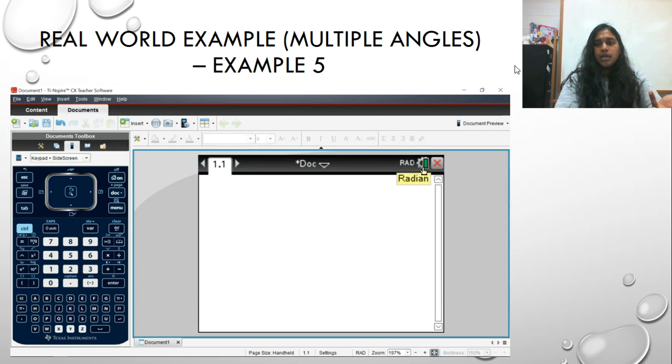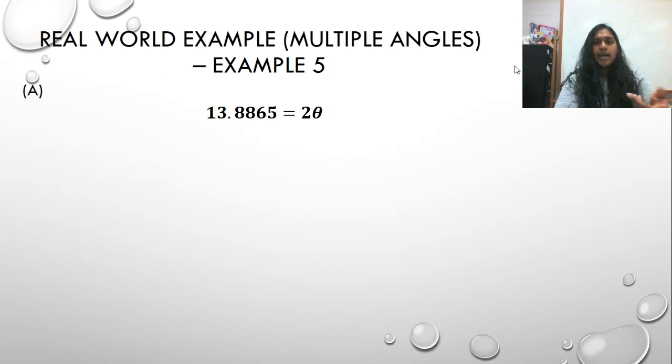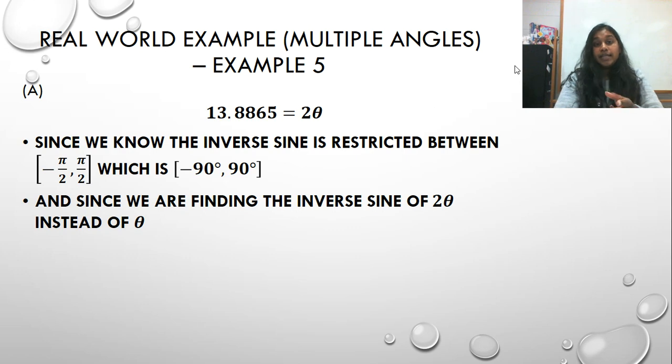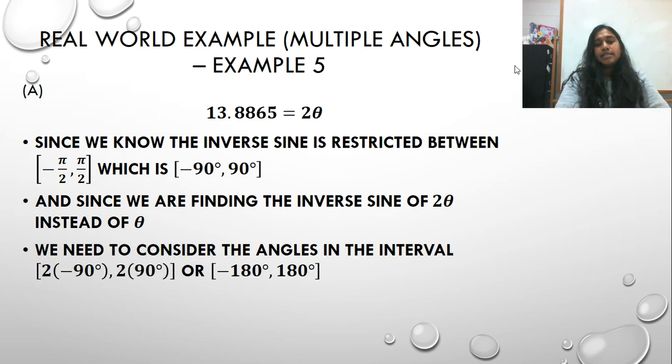But we have to account for that 2 theta. So if we know that inverse sign is restricted between negative pi over 2 and pi over 2, the right-hand side of your quadrants, or negative 90 to 90, since we're talking in degrees, then to find the inverse sign of 2 pi instead of theta, you actually increase your interval. So because it's not just pi or thetas, it's going to be 2 thetas, so we're going to increase our interval.